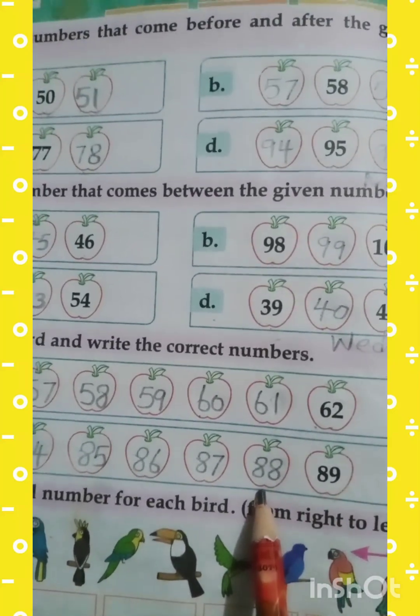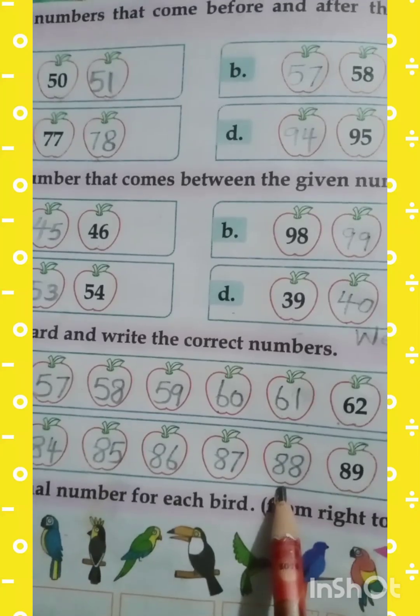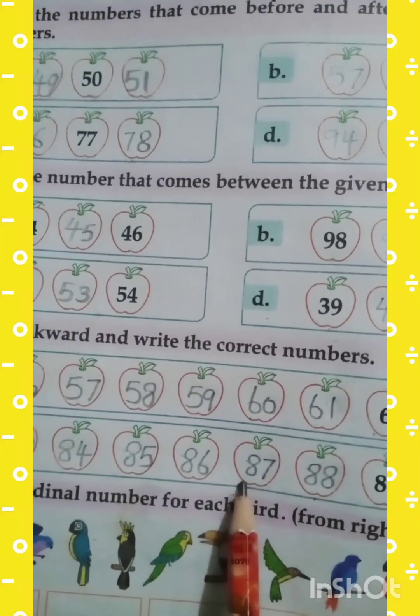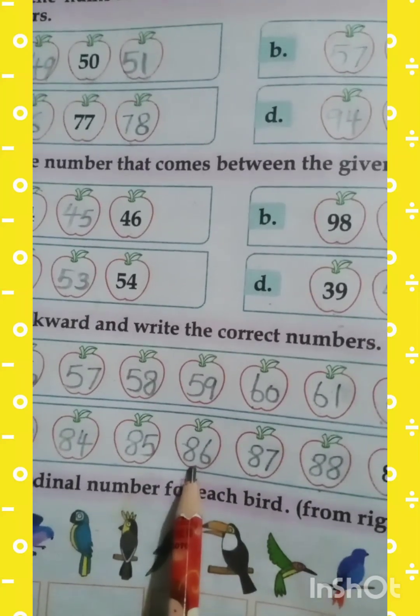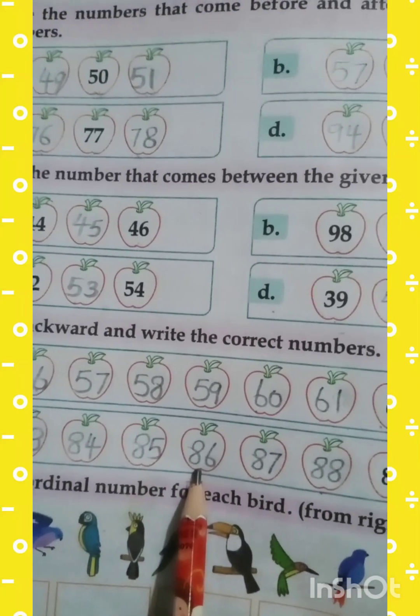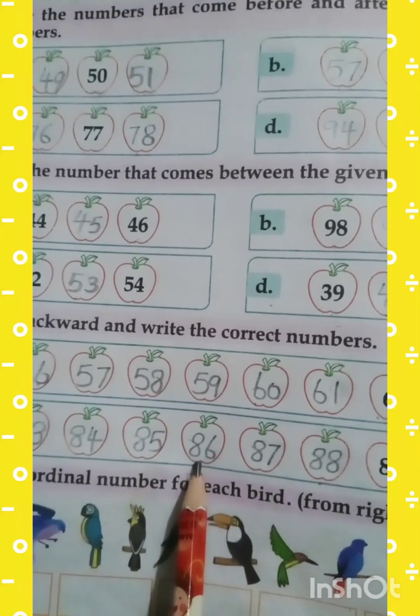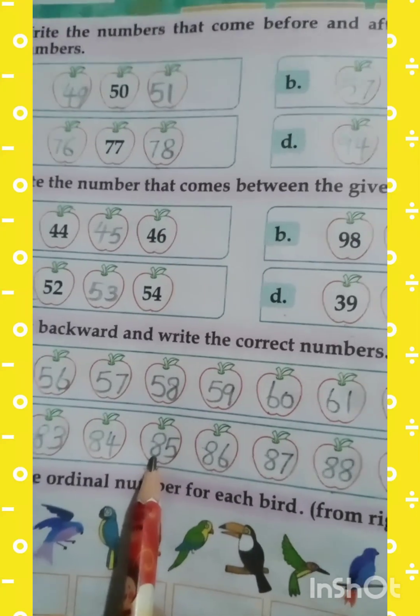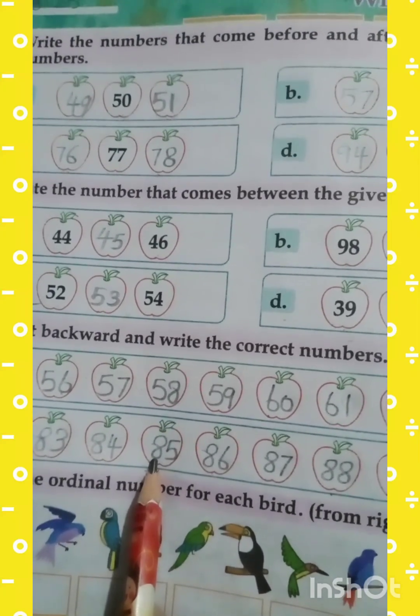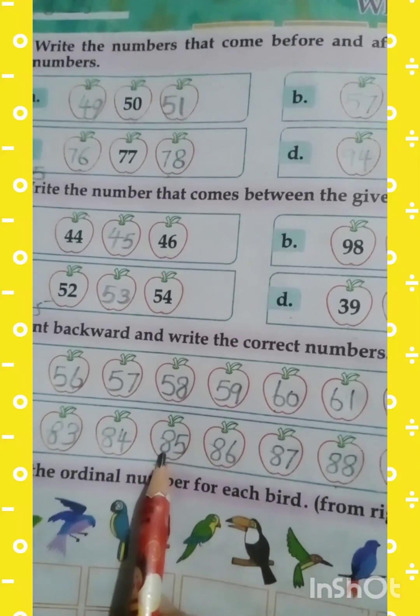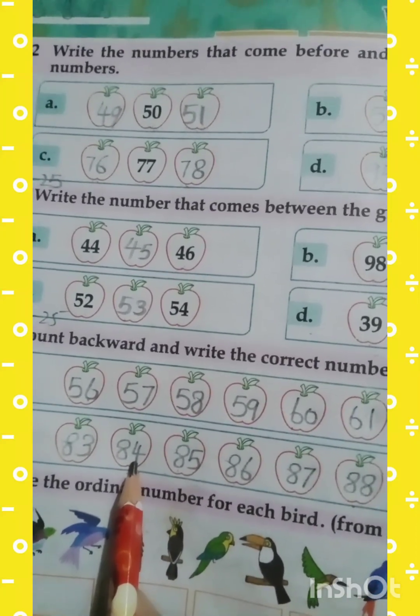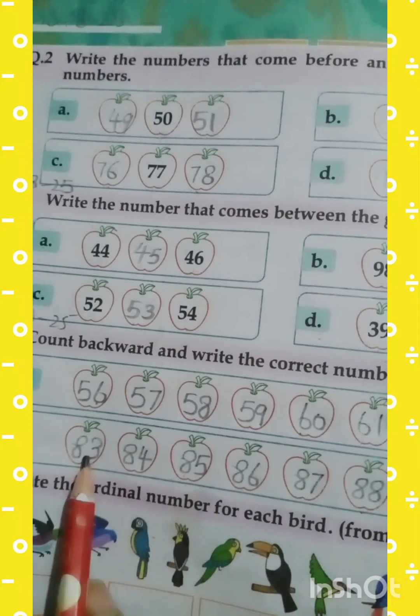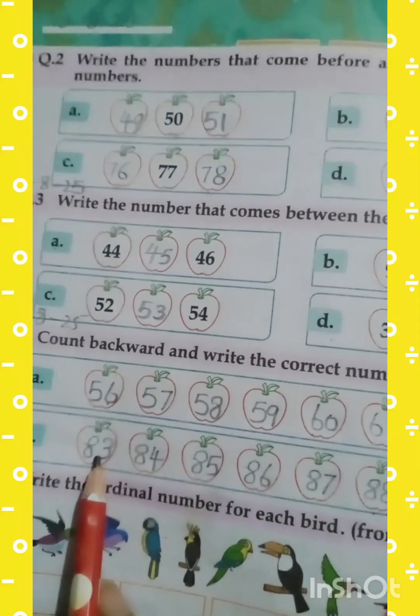Shabash! It's number 88. Comes before number 88 is number 87. Comes before number 87 is number 86. Comes before number 86 is number 85. Comes before 85 is 84. Comes before number 84 is number 83.